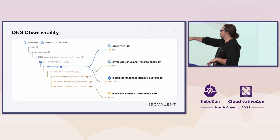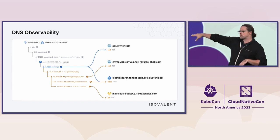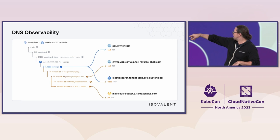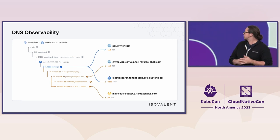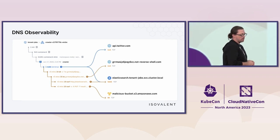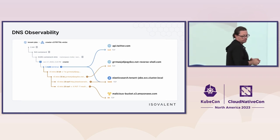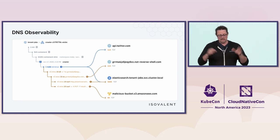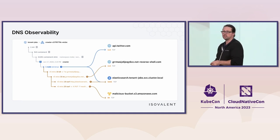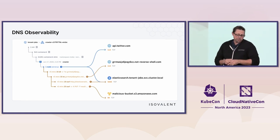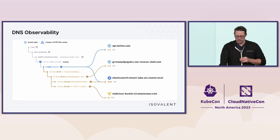You can do things like get a process execution trace. You see inside a pod — somebody executed a node server.js. Who are they talking to? They reached out to API Twitter, apparently, a few other things, Elasticsearch, and maybe a malicious bucket that you want to detect in your system. This is all really great.